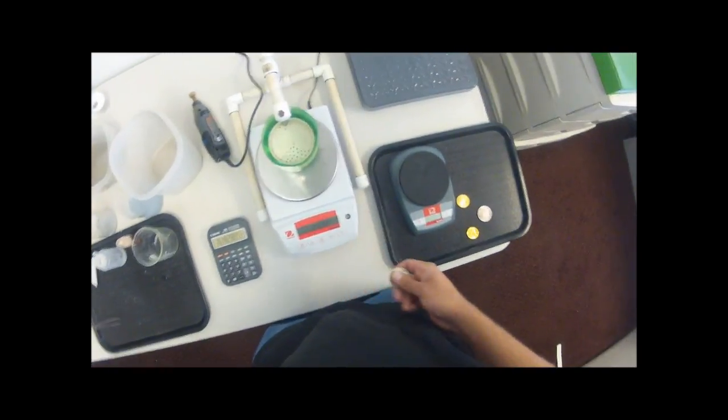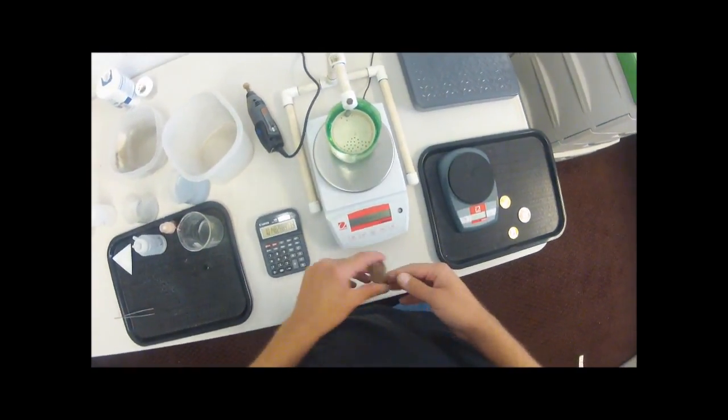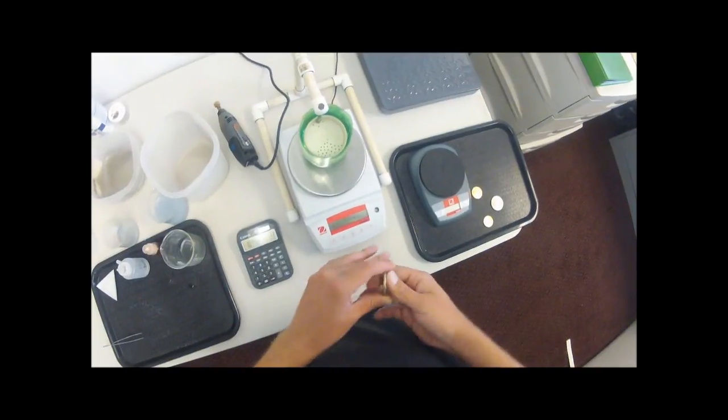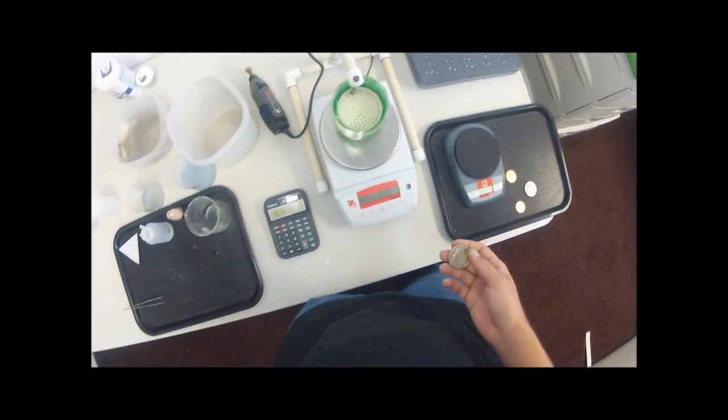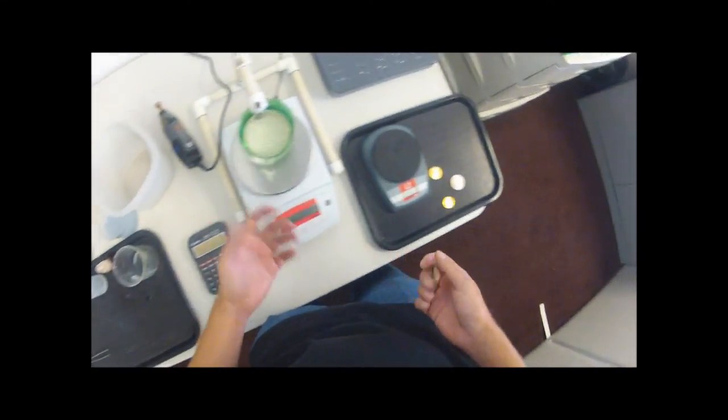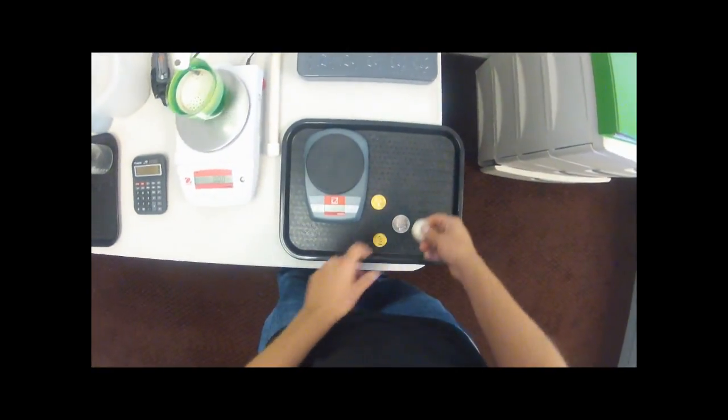So it's a very simple test to do, just measuring how much water is displaced and putting that into the weight will give us grams per cubic centimeter.